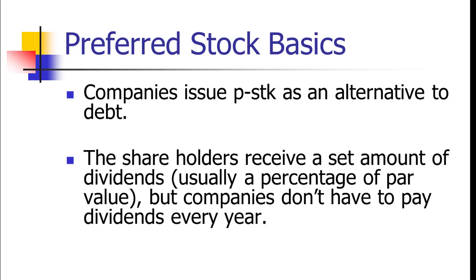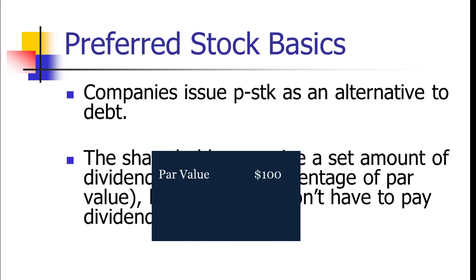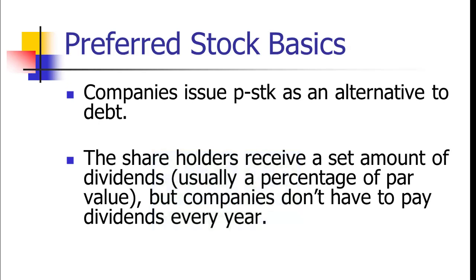Usually preferred stock is issued with a very large par value — $100, $200, $50, whatever. And this time the par value actually has some value; it's not just some number we made up to satisfy the government. We take that par value times whatever the stated percentage is, and that's the dividend each shareholder is supposed to get. The good thing from a company perspective is that if I don't have the money, I don't declare a dividend, and if I don't declare a dividend, I don't have to pay it or come up with the cash.